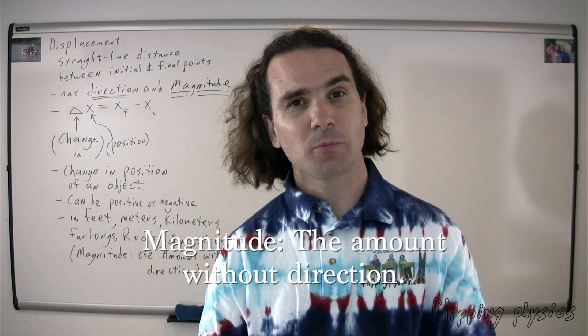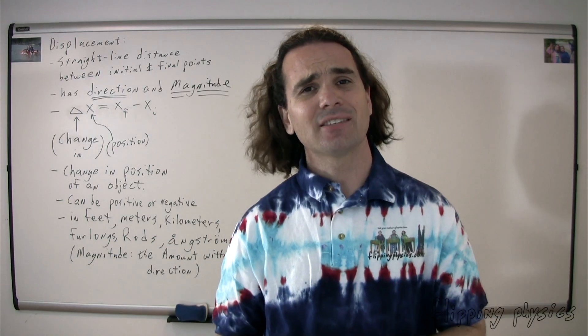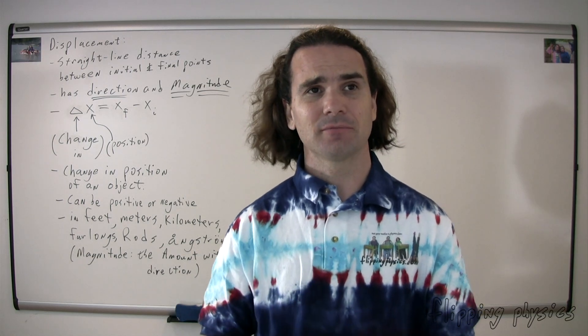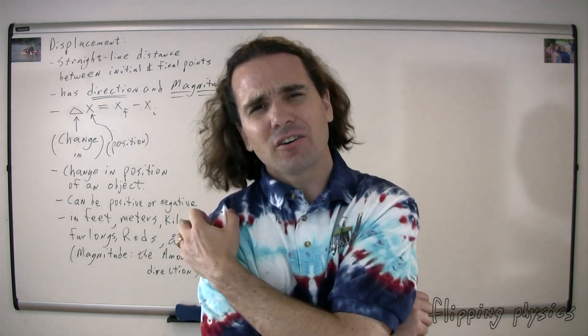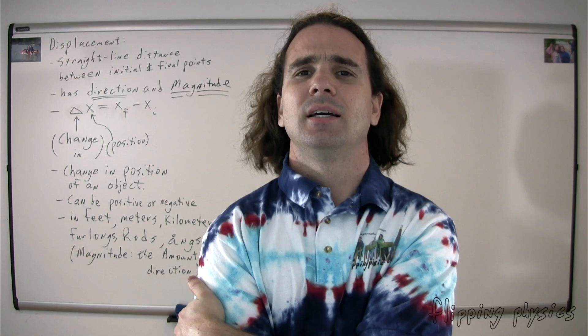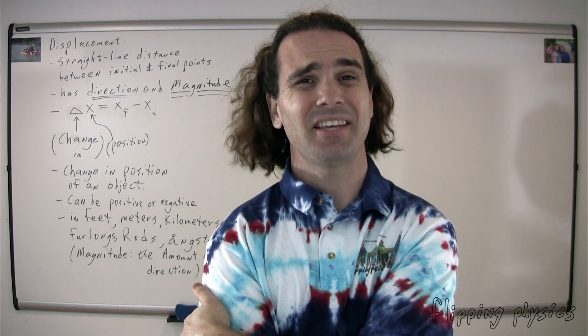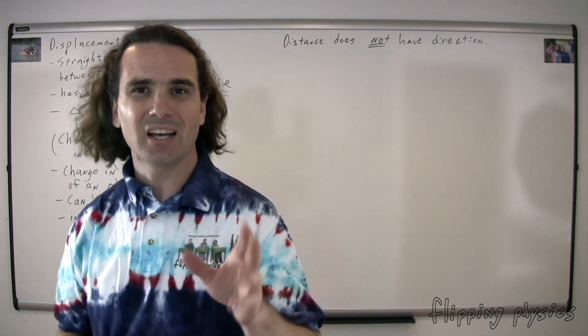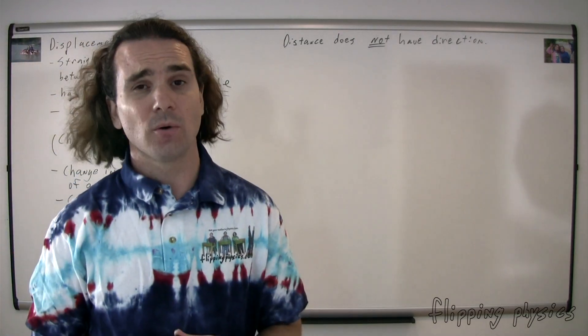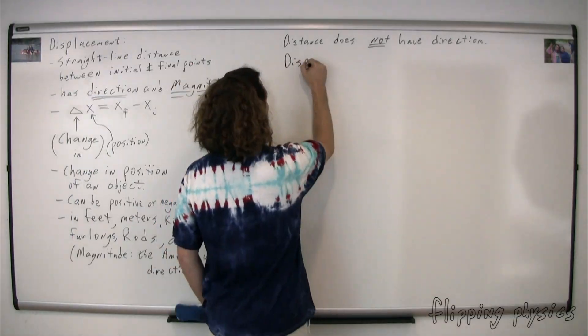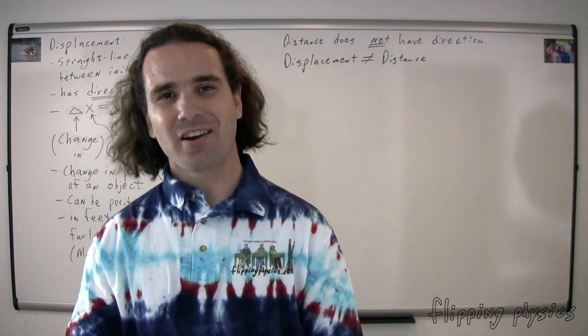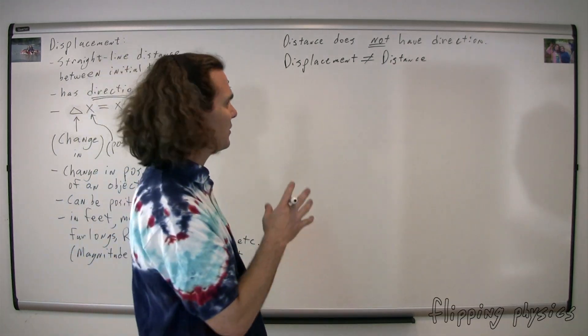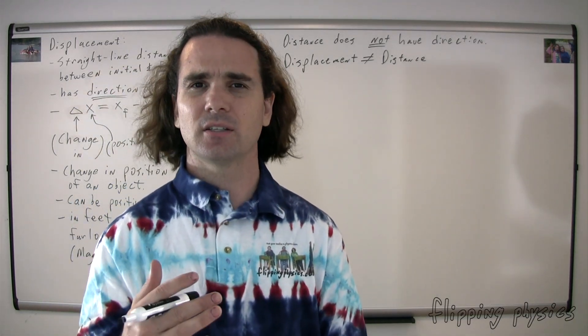It is very important that you remember that displacement has both magnitude and direction. So class, what two things does displacement have? Magnitude and direction. Then class, are displacement and distance the same thing? No. Let's try that again, class. Are displacement and distance the same thing? No. Okay. Well, does distance have direction? No. No. I don't think so. No. Distance does not have direction. Again, distance does not have direction. So, are displacement and distance the same thing? No. Displacement and distance are not the same thing. Good. Displacement does not equal distance. They are not the same thing. We'll go through some examples in just a moment to illustrate that fact. But before we do so, let's talk about and illustrate some directions.